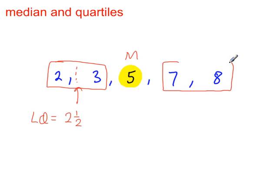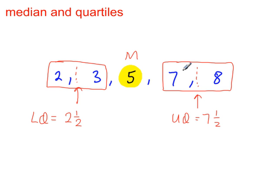Look at the upper half of the data. The middle number there is 7.5. That's the upper quartile. If you have more difficult numbers to work with, all we're doing is adding these two together and then dividing by 2.